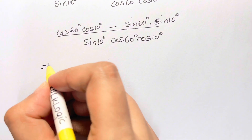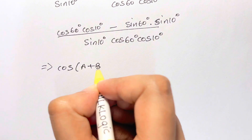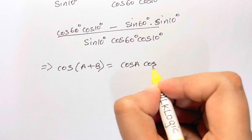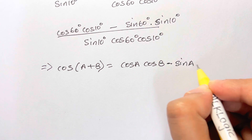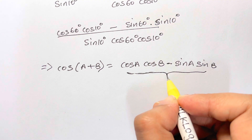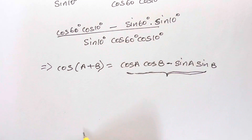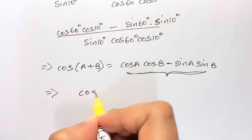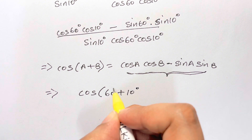As you know, cos(A+B) = cos A·cos B − sin A·sin B. So the numerator becomes cos(60° + 10°) = cos(70°).